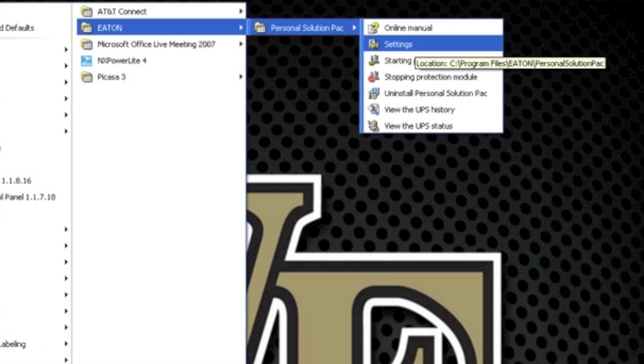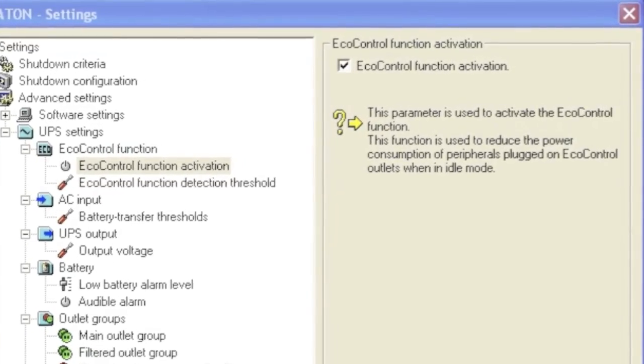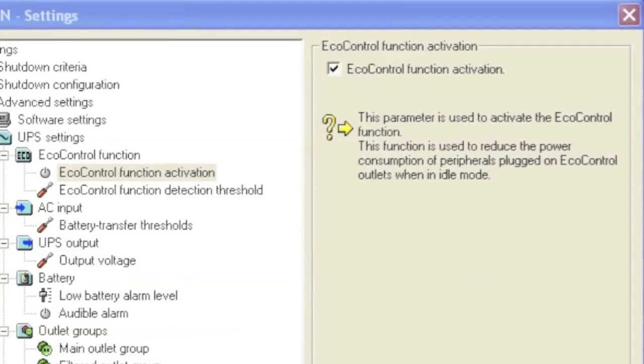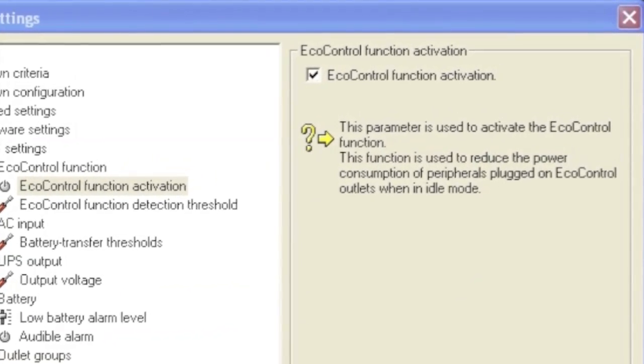you can navigate to it under All Programs, Eaton, Personal Solutions Pack, and then select Settings. On the Settings screen, you'll find under UPS Settings, the EcoControl function Activation. This by default is unselected when the UPS is shipped, so you'll need to select that checkbox and hit OK.